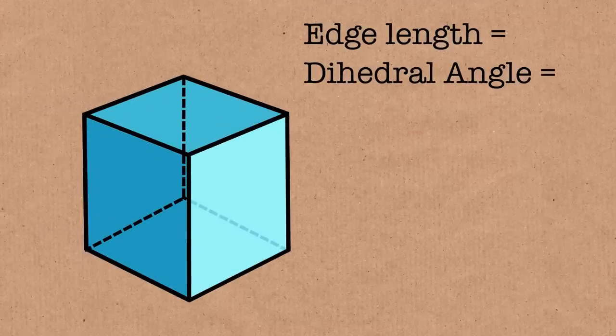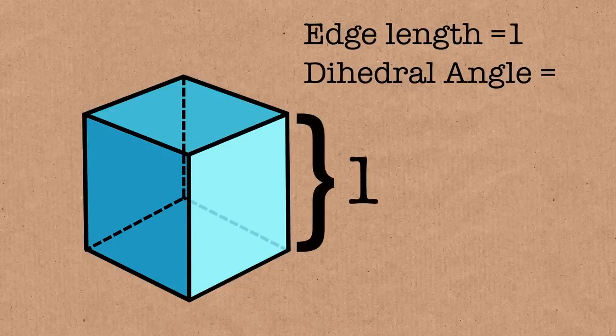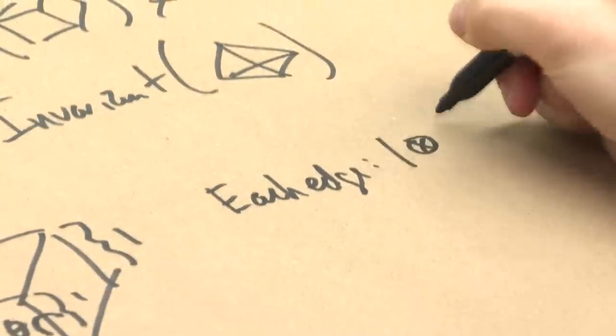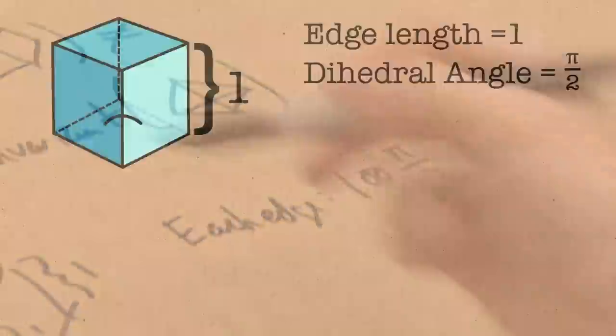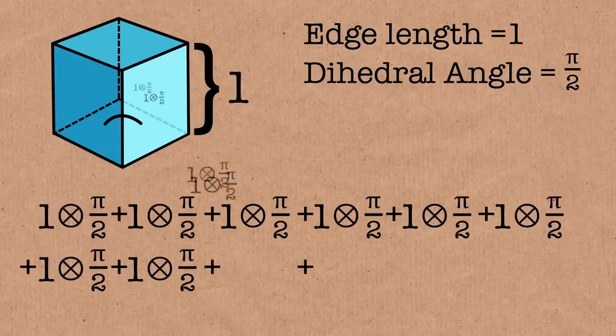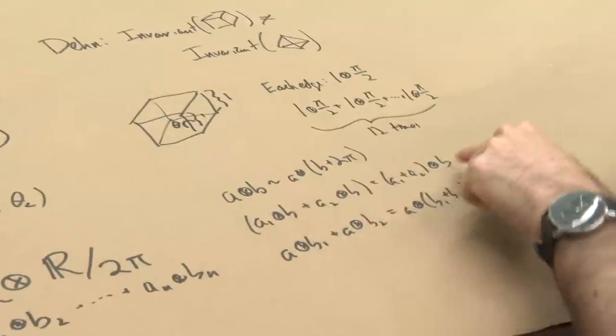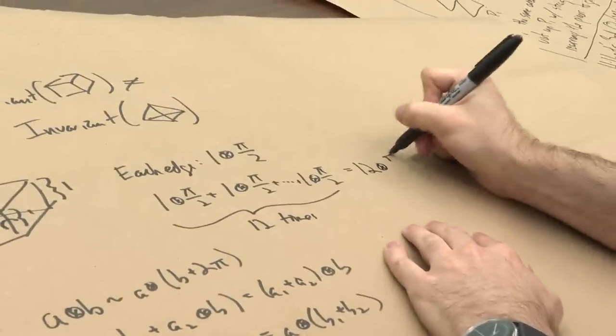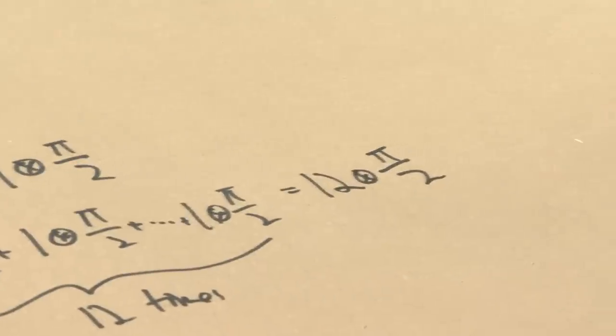What's the Dehn invariant of a cube? So we can do the Dehn invariant of a cube. So let's do the cube. So luckily all the edges are the same, so we only have to compute with one edge. So let's say we have a cube of side length one, and what do we have to do? We have to compute the angle. That's just 90 degrees or π over 2. So for each edge contributes 1 tensor π over 2. And then how many edges are there? One, two, three, four, five, six, seven, eight, nine, ten, eleven, twelve. And because of this rule, that if the second guys are the same we can add the first guys, this is just the same as 12 tensor π over 2. So that's the Dehn invariant of the cube.